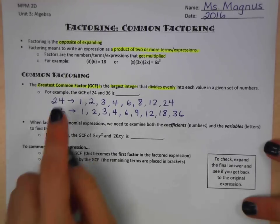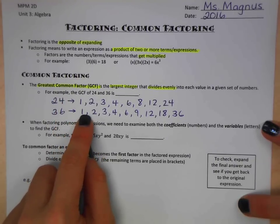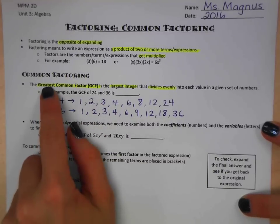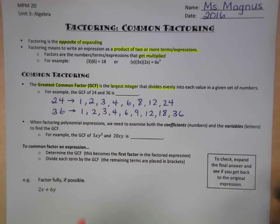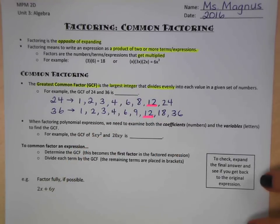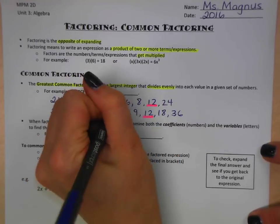We want to look for numbers that are in common. So common numbers, well obviously 1, 2, 3, 4 are all the same in both sets of numbers. But we're looking for the greatest common number. So the one that we can see in both is 12. So the greatest common factor of 24 and 36 is 12.